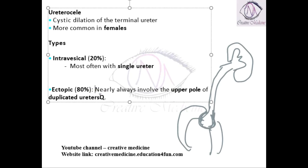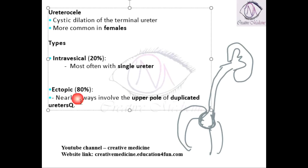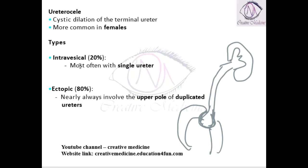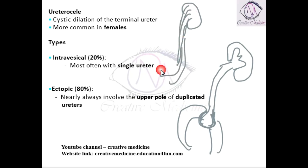Ectopic ureterocele mainly involves the upper pole of a duplicated system. An ectopic ureterocele is mainly associated with a duplicated ureter — that means there are actually two ureters. The second ureter, associated with the upper pole, is responsible for the ureterocele.